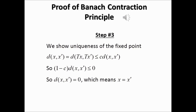Subtracting C times the distance between X and X' from both sides of the inequality, we see that (1 − C) times the distance between X and X' is less than or equal to zero. But because C is between 0 and 1, we have 1 − C > 0, and since distance is non-negative, the distance between X and X' must be exactly zero. This happens only if X equals X', so the fixed point is unique.